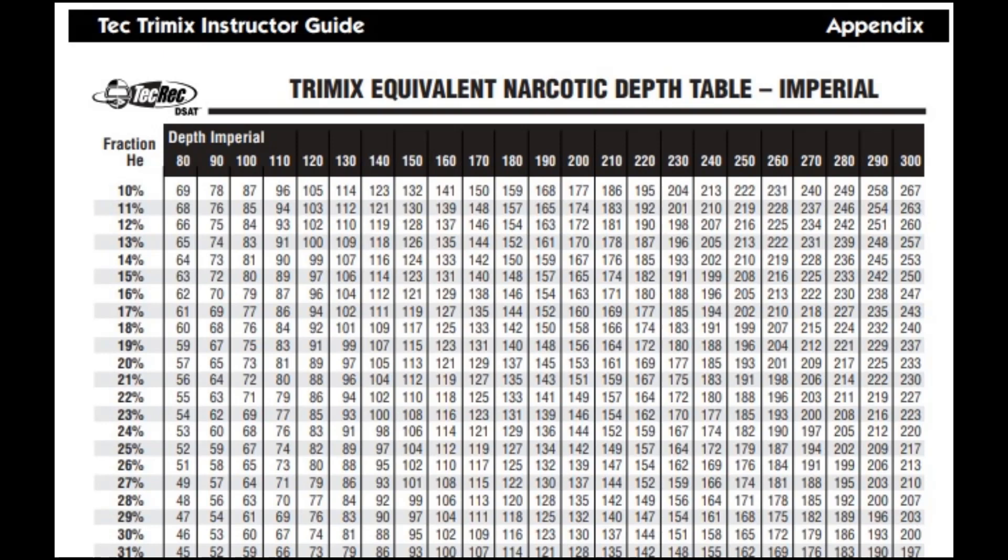I believe part of this problem is the heavy dependence upon trimix tables for the END and the actual depth. So in this video we're going to go through the background calculations used to determine how much helium you need for a particular equivalent narcotic depth and actual depth. Once we go through the background calculations, it will be much easier for the student to understand this process.